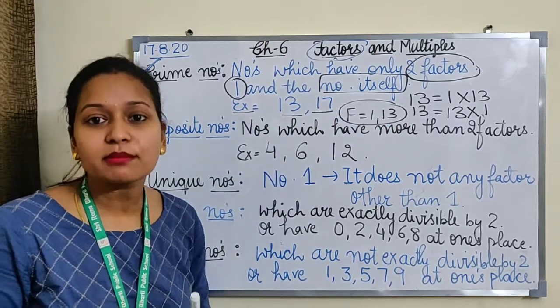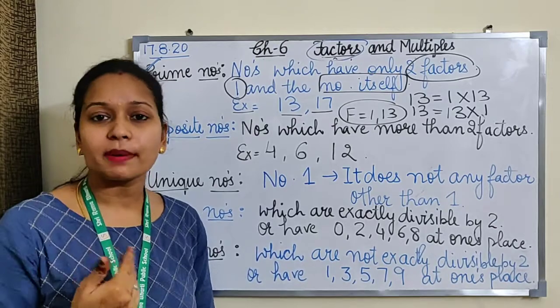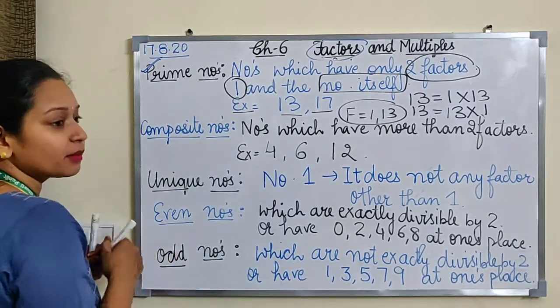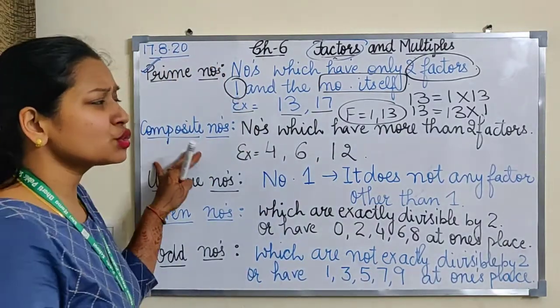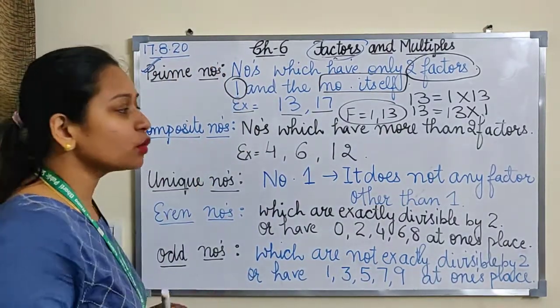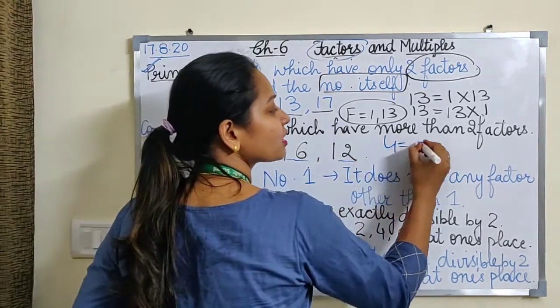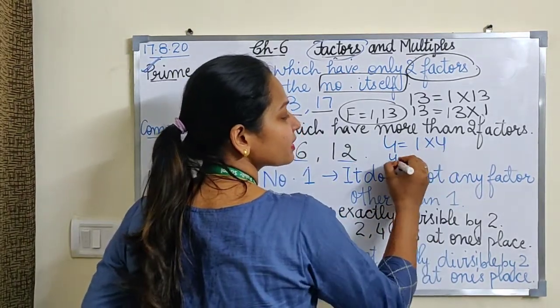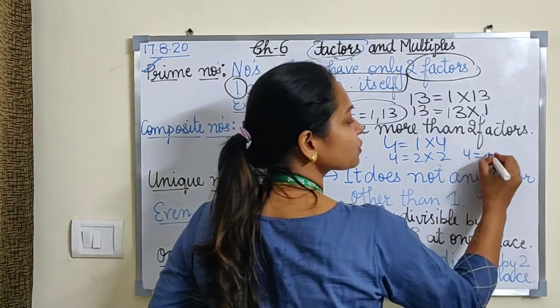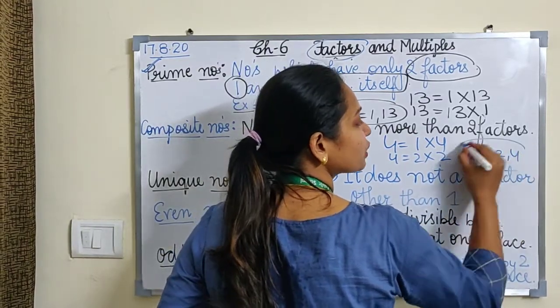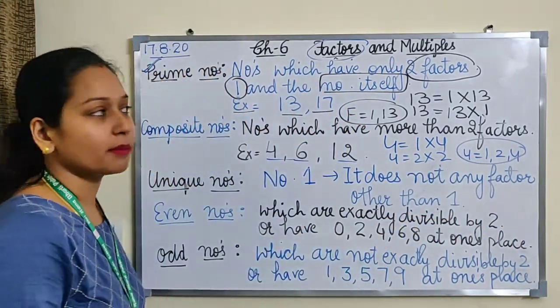Moving on to the second number - composite numbers. Numbers which have more than two factors. There are few numbers which have more than two factors, like 4, 6, 12. Let's see, 4 has how many factors - 1 into 4 and then 2 into 2. So factors of 4 are 1, 2, and 4. It has more than two factors, it means three factors. So this is called a composite number.